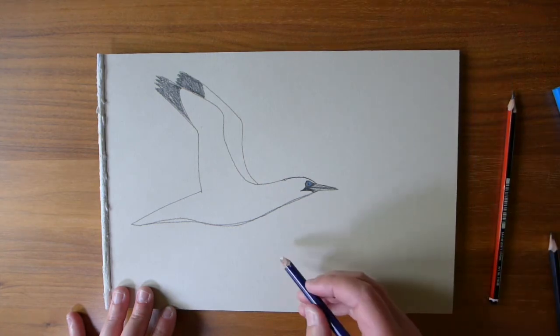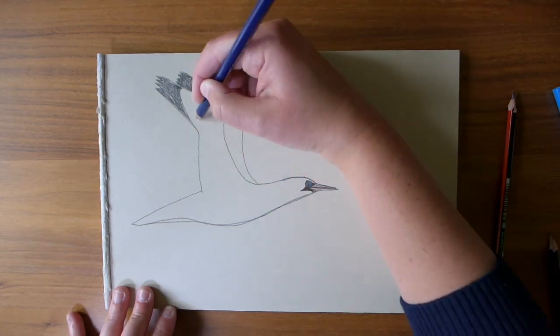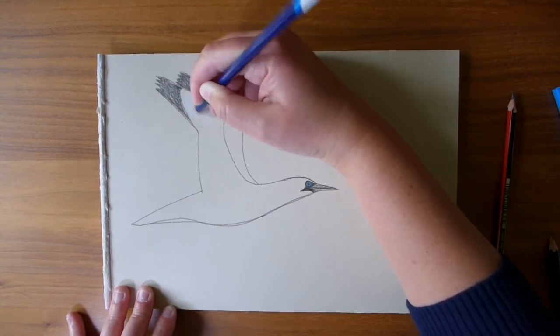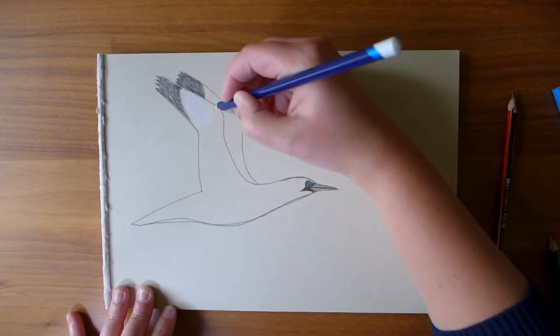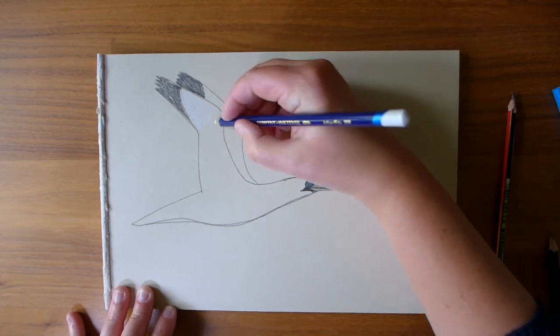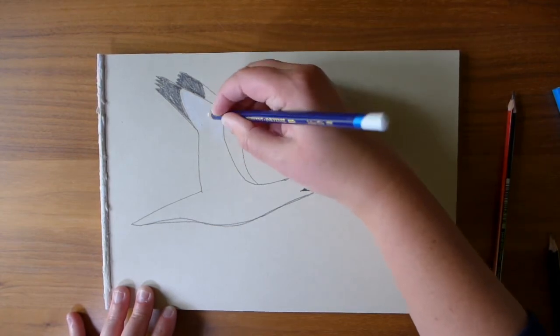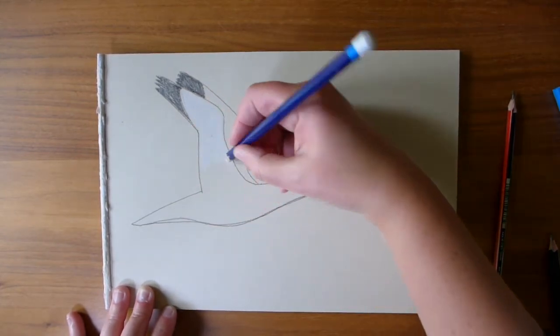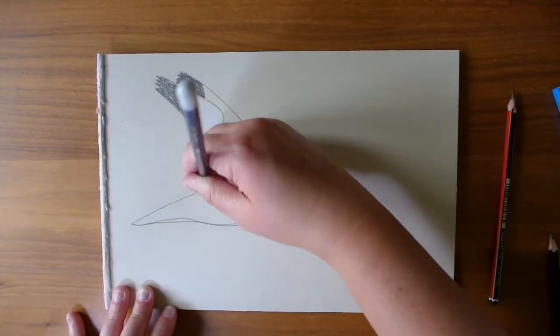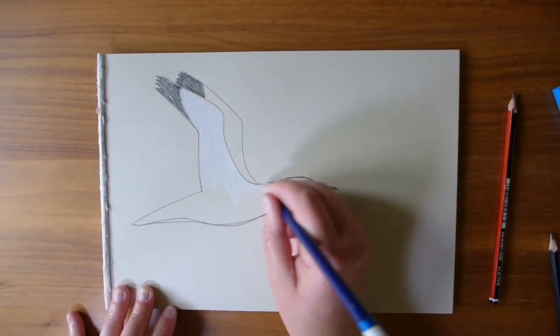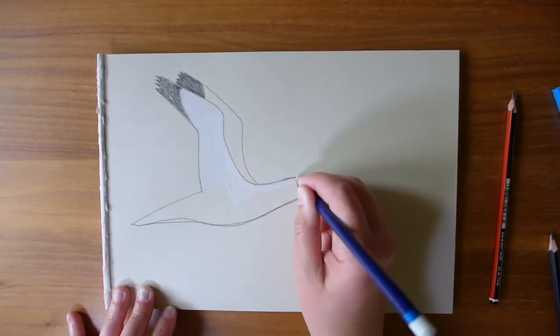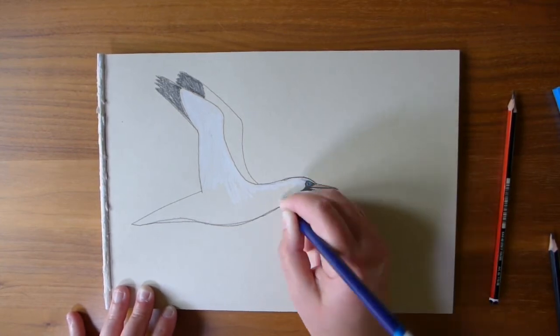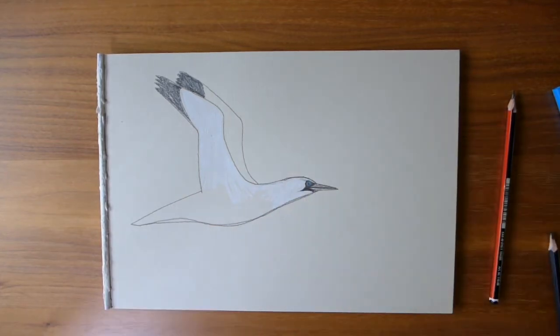With your white pencil start colouring in the gannet and I mentioned at the start of the video that there's a hundred and fifty thousand gannets that visit Bass Rock which is the largest colony anywhere in the world of northern gannets it's amazing so that makes the Bass Rock a very special place.